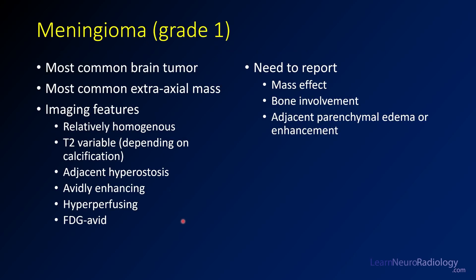This was a case of meningioma. Meningiomas are the most common brain tumors of all comers and the most common extra-axial mass, so they're very common in practice and on ABR tests. They tend to be relatively homogeneous, can be variable on T2, and are often avidly enhancing. On advanced imaging they may be hyperperfusing and FDG avid.